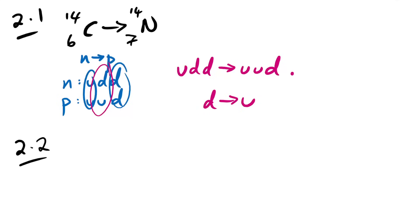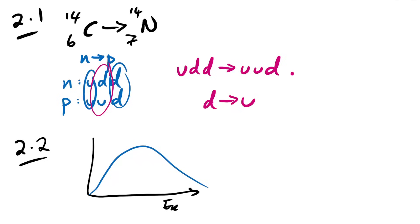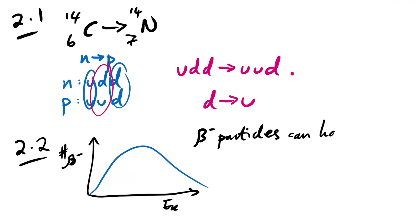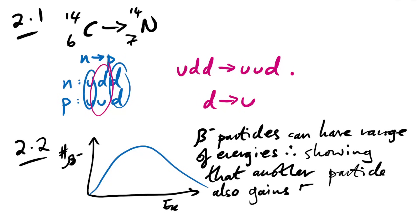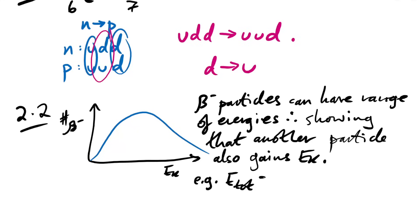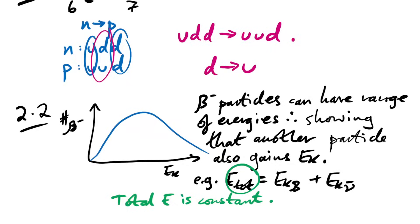Question 2.2: explain how the figure supports the existence of the anti-neutrino. Beta minus particles can have a range of energies, showing that another particle also gains kinetic energy. The total energy equals the kinetic energy of the beta minus particle plus the kinetic energy of the anti-neutrino, so total energy is constant and the maximum energy is shared between them.